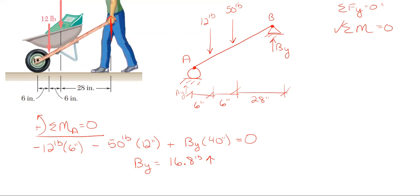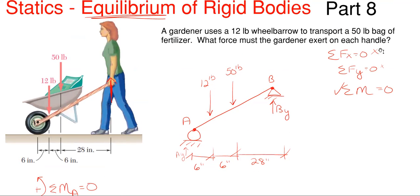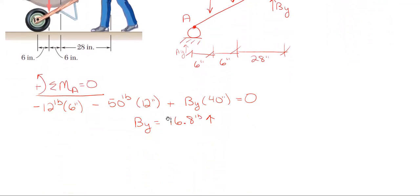This is not the final answer. You have to watch out for these questions because they like to throw in this trick. It's not asking for the total force she's exerting on the wheelbarrow, it's asking what is it at each handle. This is the total amount of force, 16.8 pounds. So for each handle, there are two handles.